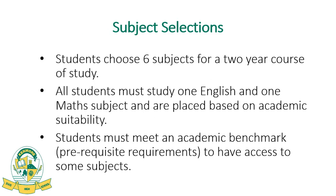During the subject selection process, students choose six subjects for two years. All students must study either one English subject — that's a Queensland legislation — and also one maths subject in Year 11 and 12. At Kenmore State High School, we make sure that students are placed and nominated into their appropriate level of English and maths. We don't want to see students set up for failure in a subject that's not at their level; we want to see them working at a level where they can all be successful.